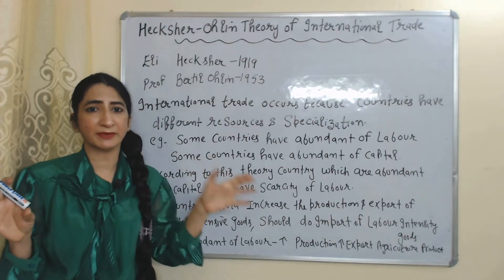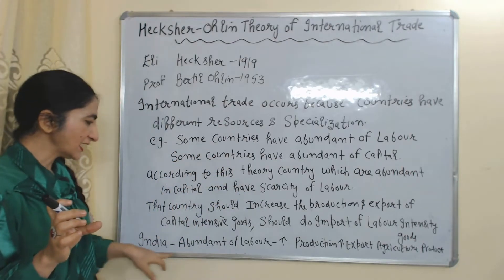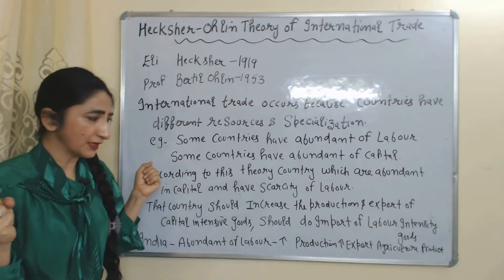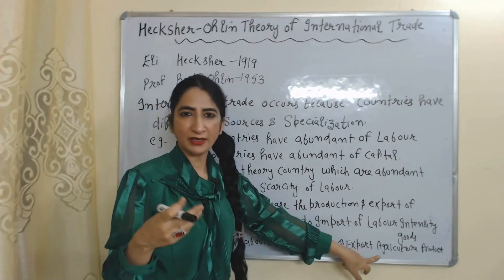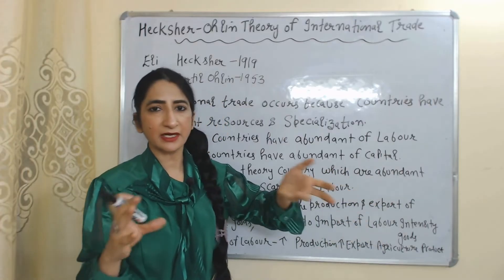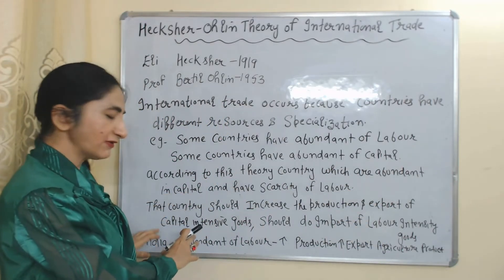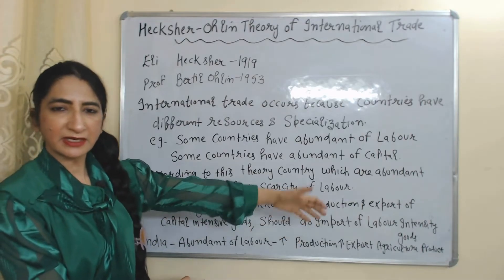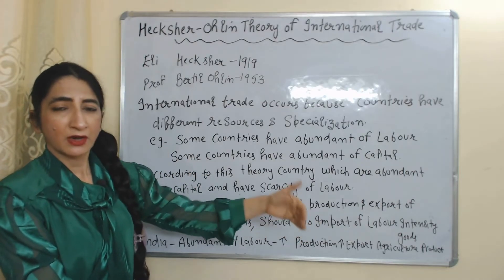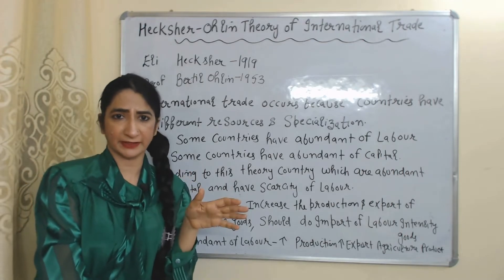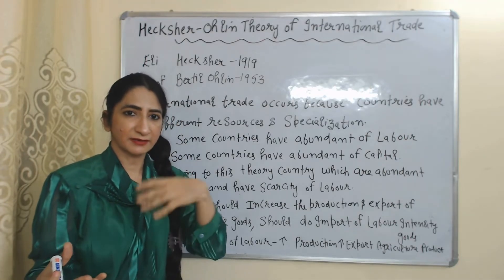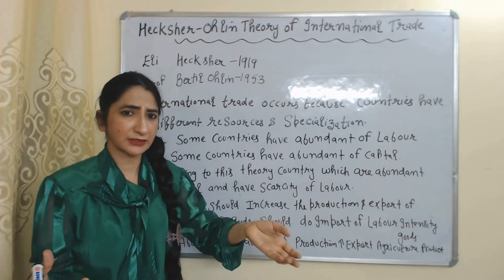On the other hand, these countries should increase the import of labor-intensive goods. For example, India is abundant in labor because India's population is large, and agriculture products require more labor, making them labor-intensive. Since India has abundant labor, India increases the production and export of agriculture products. On the other hand, India has a scarcity of capital, and production of laptops and mobiles requires more capital, so India imports capital-intensive products like laptops, mobiles, and computers.